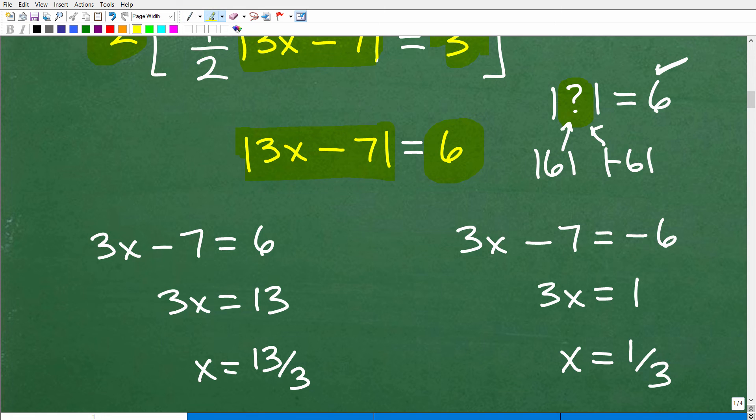So when it comes to absolute value equations, you're always going to have two answers. So 3x minus 7 must either be 6 or negative 6. And so we're going to set up two equations. 3x minus 7 is equal to a positive 6 or 3x minus 7 is equal to a negative 6.